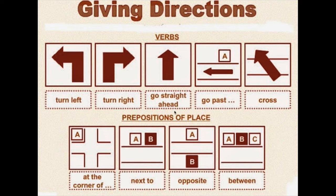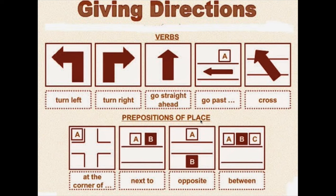También es importante tener en cuenta otras preposiciones de lugar, aparte de las que vimos anteriormente. At the corner of — en la esquina de. Next to — al lado de. Opposite — en sentido opuesto a. Between — en medio de. Como habíamos trabajado en el cuadernito — estas expresiones, estos verbos y estas preposiciones de lugar les pueden ayudar a aprender cómo se da una instrucción y una dirección en inglés.